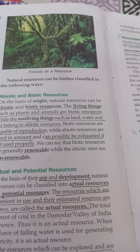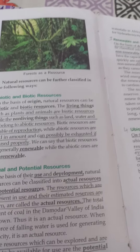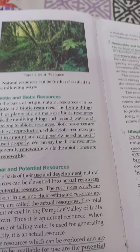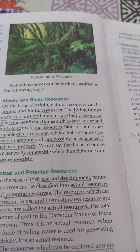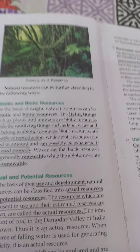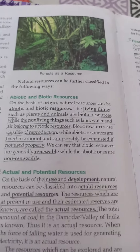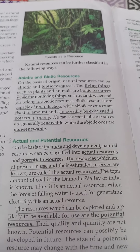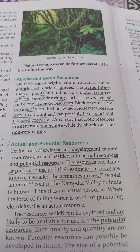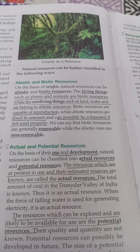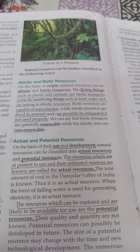Actual resources are those resources whose reserves we know about and which we are currently using — like petroleum and coal. These fall under actual resources. Whereas potential resources are those resources which can be explored and are likely to be available for use in the future.